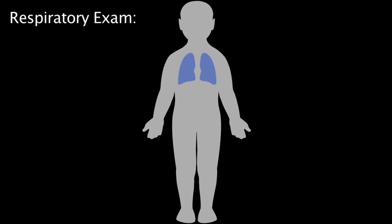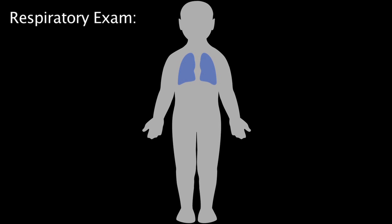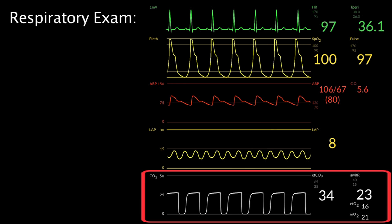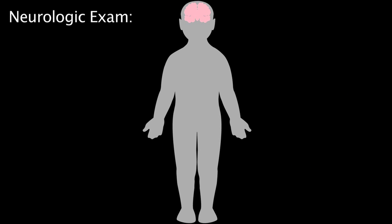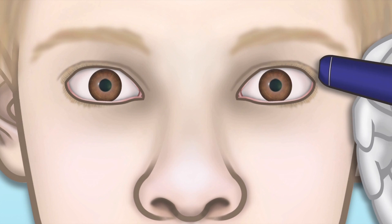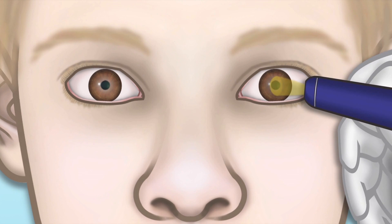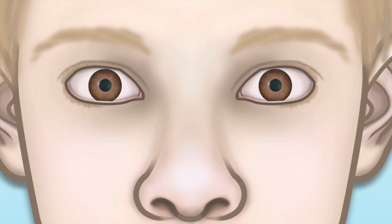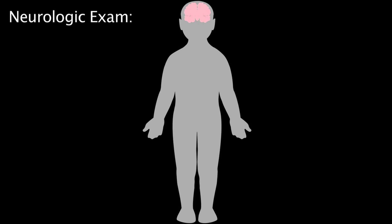The respiratory exam includes assessing breath sounds, observing chest rise and symmetry, and assessing oxygen saturation and end-tidal carbon dioxide. The neurologic exam includes hourly assessment of the patient's pupil size and reaction to light, and assessment of level of consciousness until awake. Patients are at risk for neurologic injury after cardiopulmonary bypass.